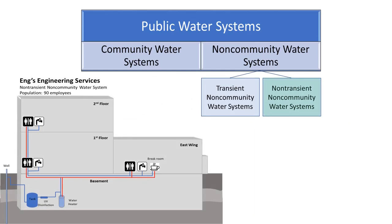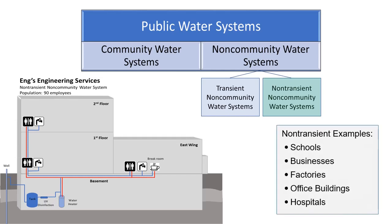Non-transient non-community water systems serve at least 25 of the same people for at least six months out of the year. The population is considered non-transient because it is the same people who are there for an extended period of time. Examples may include schools, businesses, factories, office buildings, and hospitals.